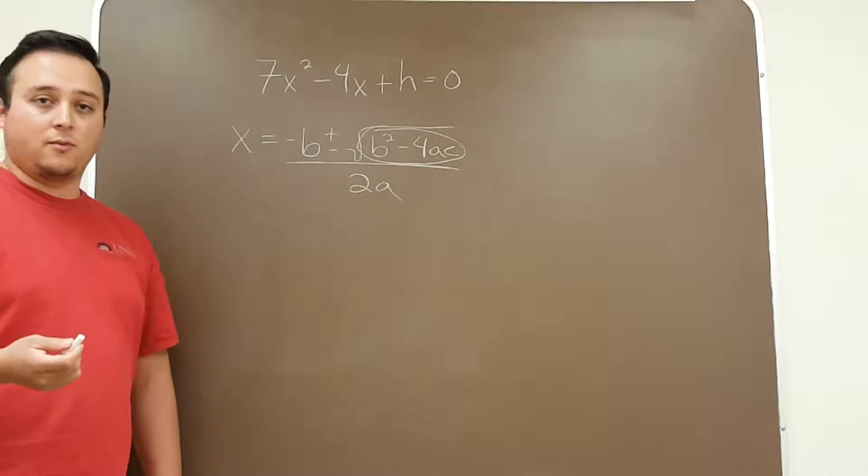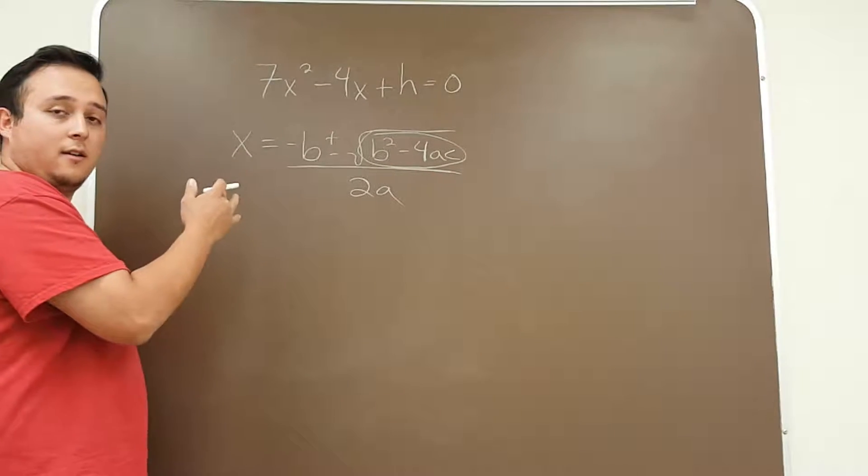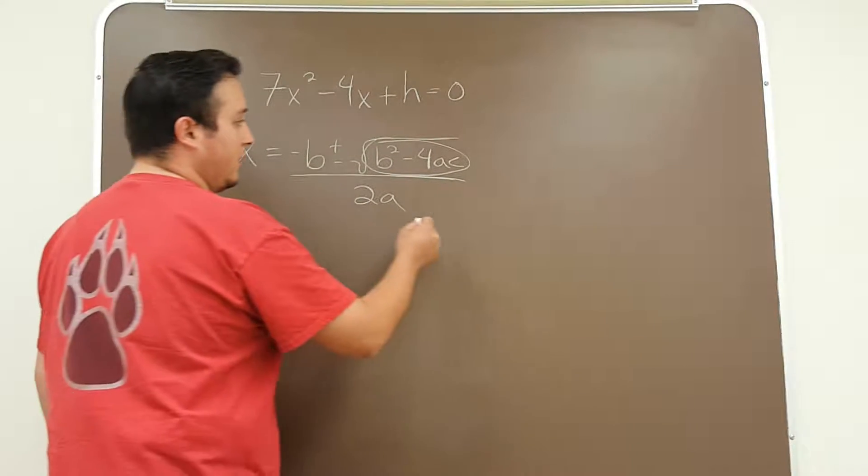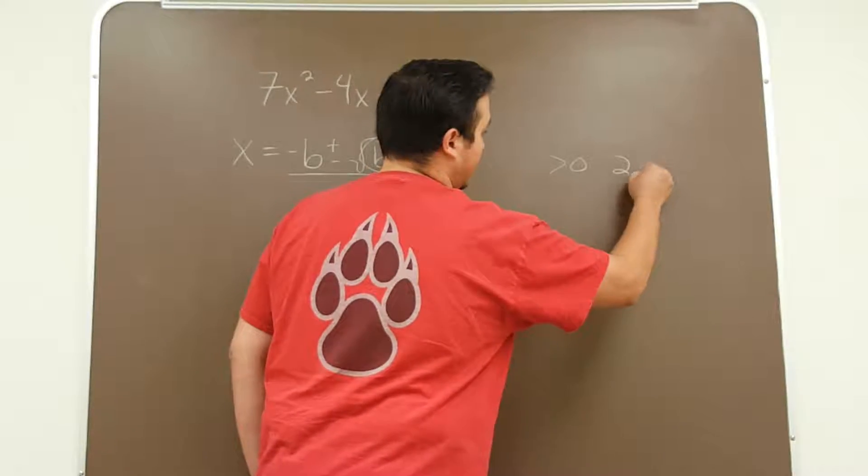Now since it's inside the radical, the sign of this number dictates how many solutions you're going to have. So if the discriminant is greater than 0, you're going to have two solutions.